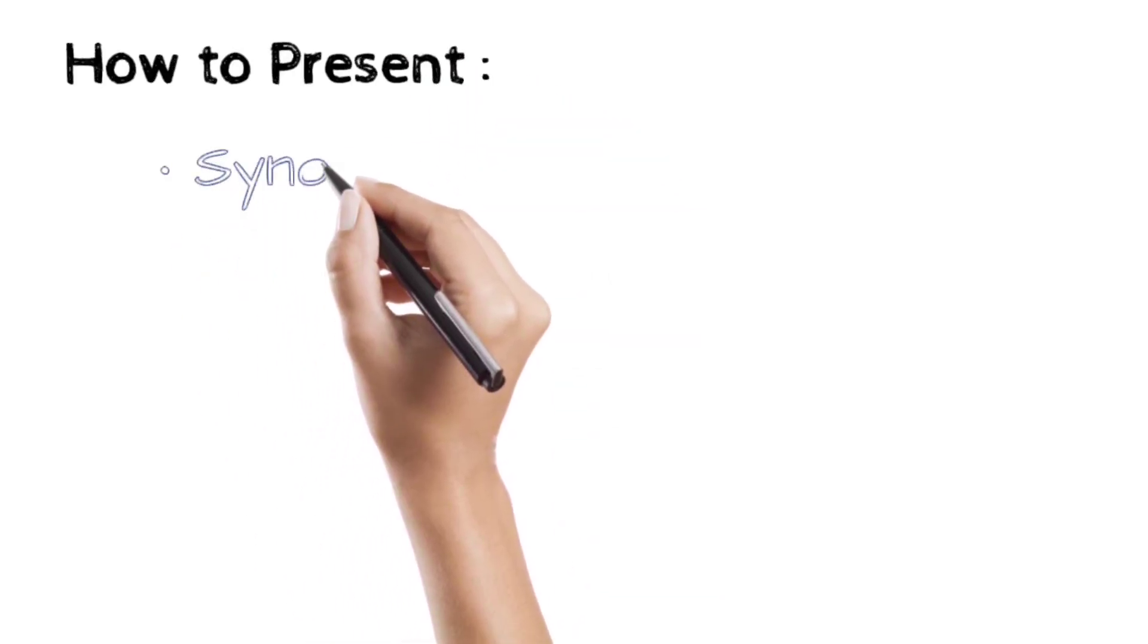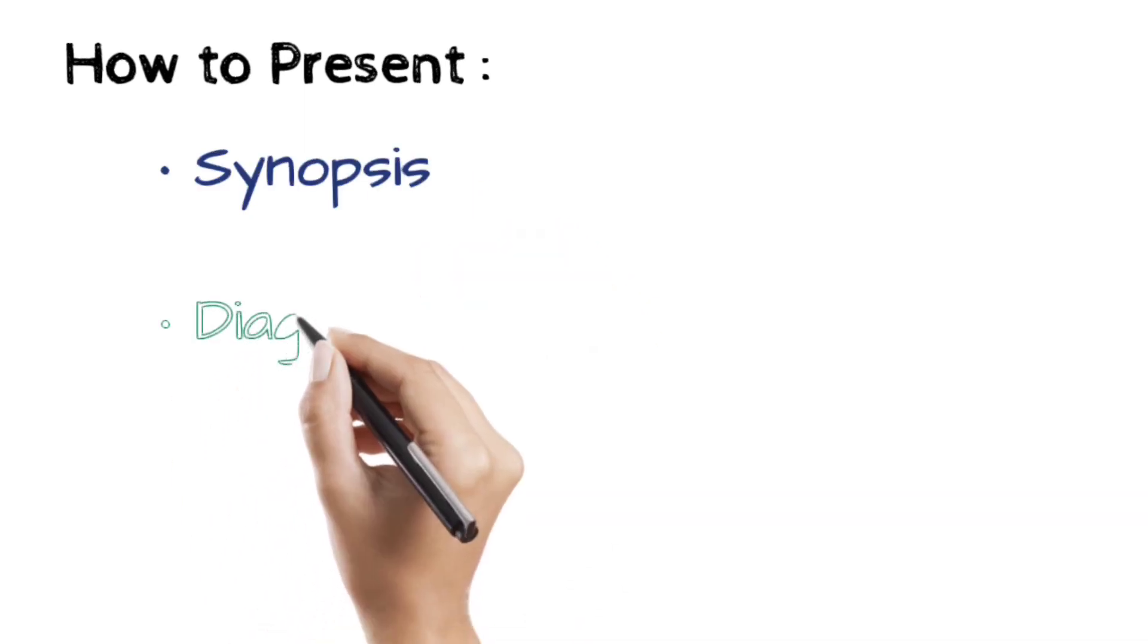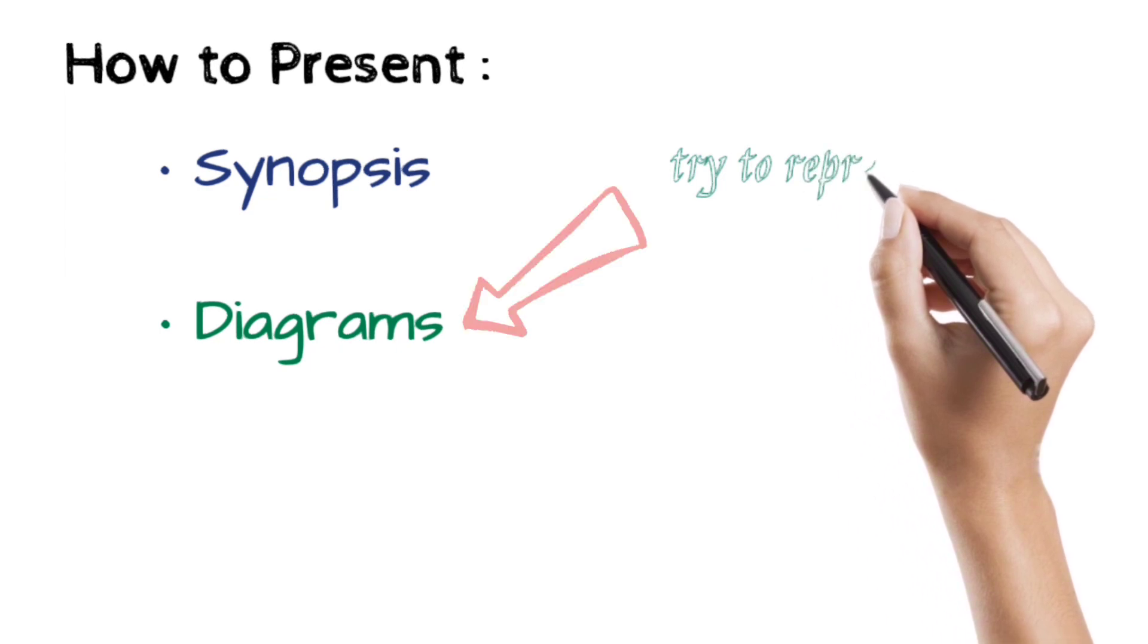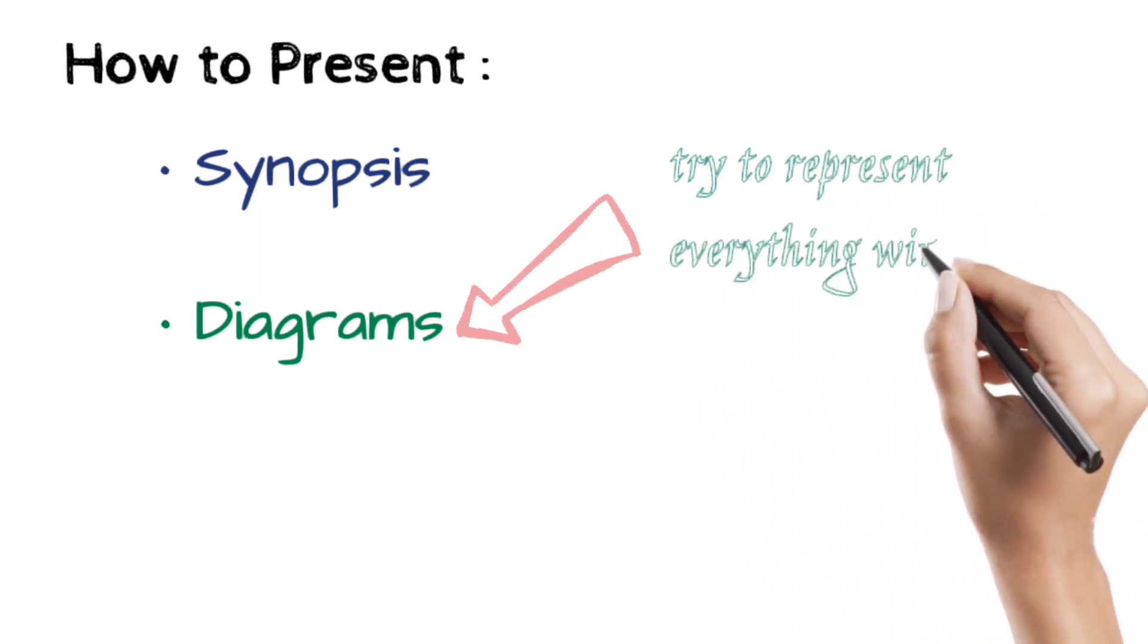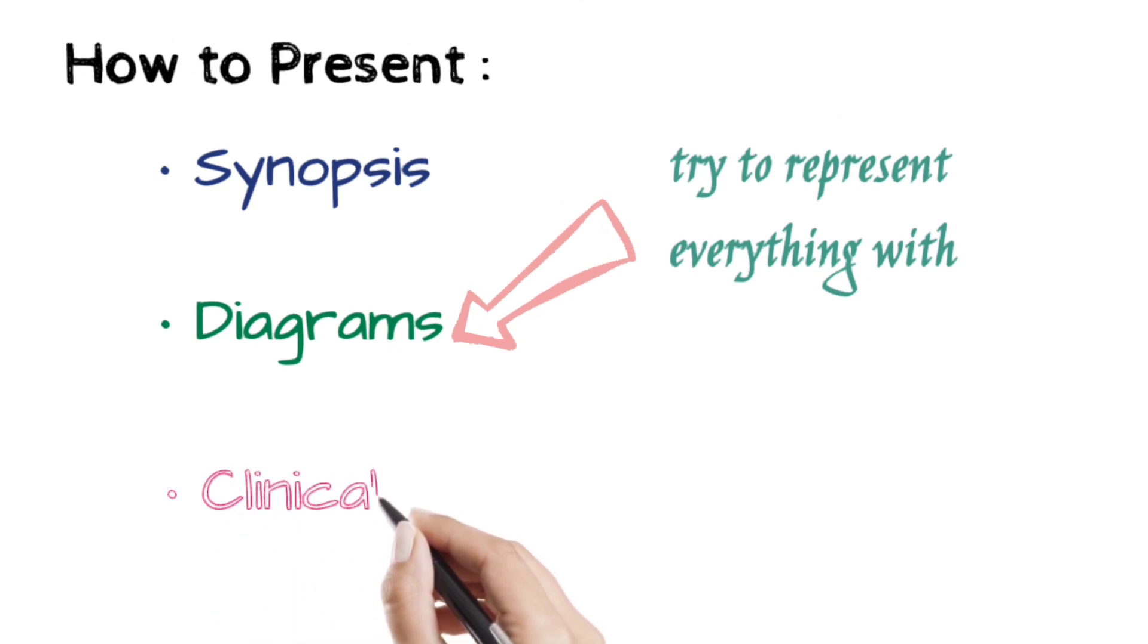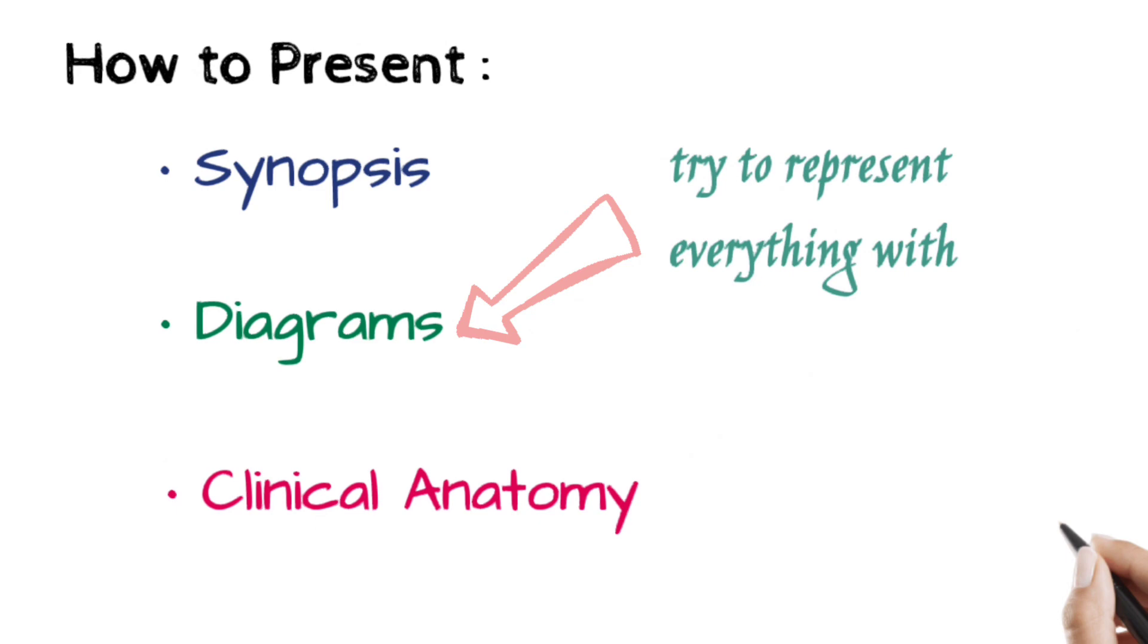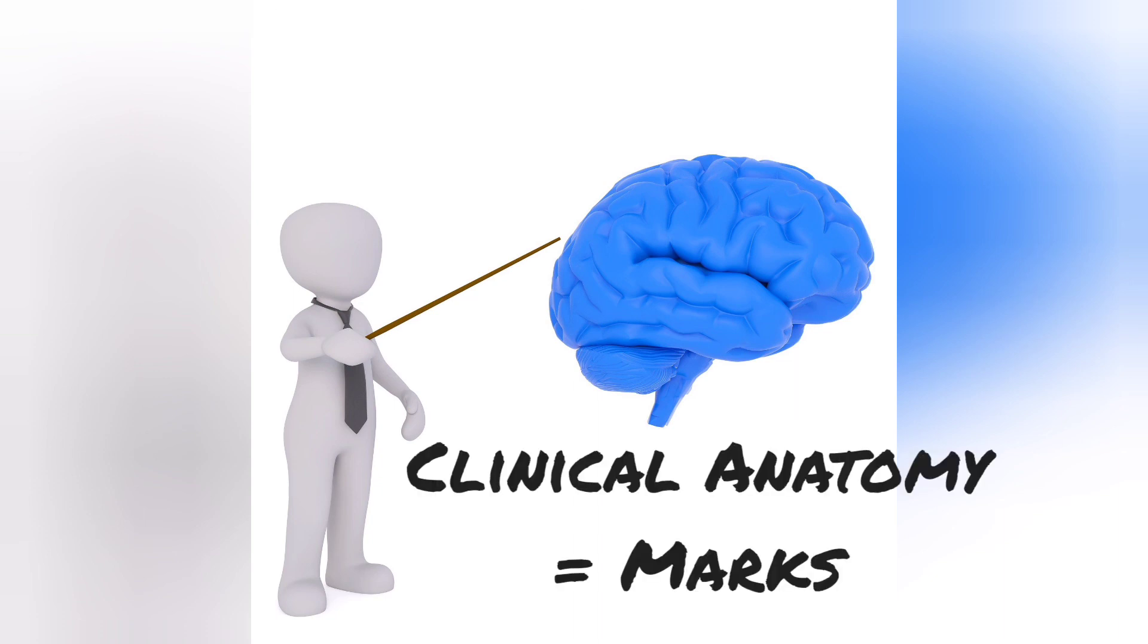Put a synopsis consisting of introduction and subdivisions containing the 4 types of spaces and its contents and boundaries. And finally, clinical anatomy. And explain it in a sequence. And if you think that you don't have enough time, just draw out the diagrams which are necessary for it. The diagrams should explain what you wish to say. That's enough and never forget to add clinical anatomy. It is the main point in scoring marks.